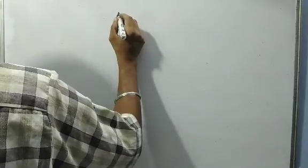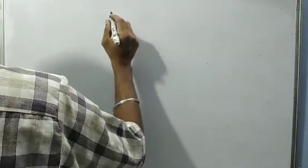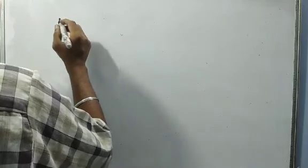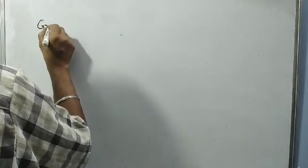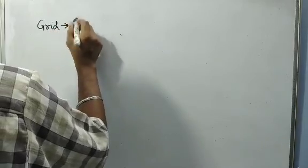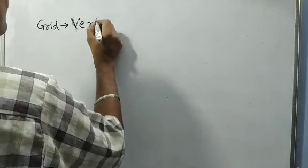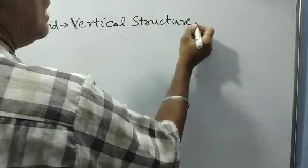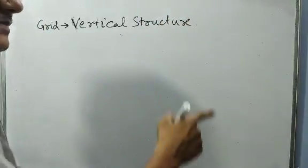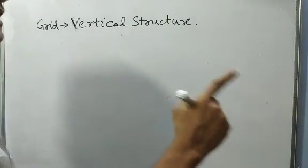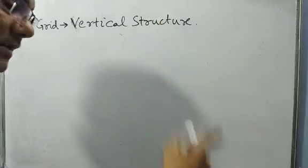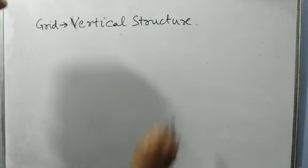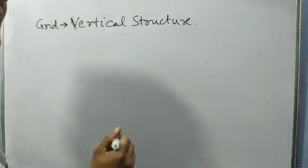Our topic of discussion is about the smart grid architecture designs. Today's electric grid is designed to operate as a vertical structure. The vertical structure means generation, transmission, distribution, and utilization are all managed by one utility company — one utility company is controlling the generation, transmission, distribution, and utilization, and we pay back to them.